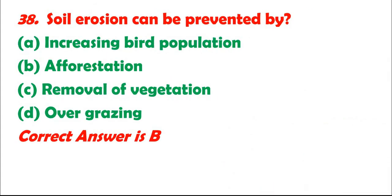Question 38: Soil erosion can be prevented by: A. Increasing bird population. B. Afforestation. C. Removal of vegetation. D. Overgrazing. Correct answer is B.